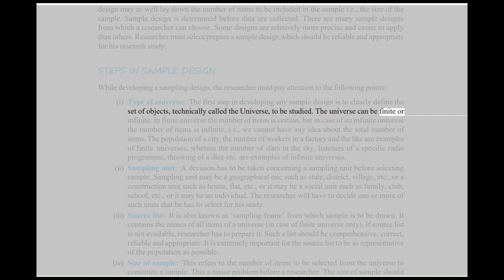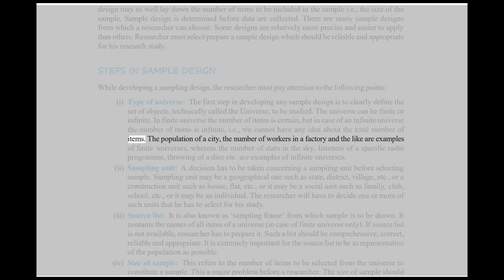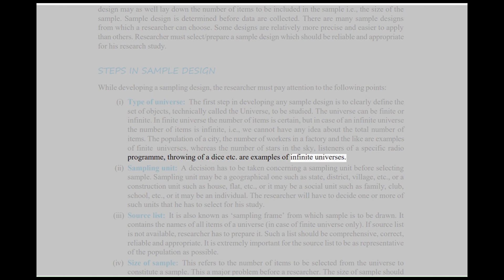The universe can be finite or infinite. In a finite universe the number of items is certain, but in case of an infinite universe the number of items is infinite, i.e. we cannot have any idea about the total number of items. The population of a city, the number of workers in a factory, and the like are examples of finite universes, whereas the number of stars in the sky, listeners of a specific radio program, throwing of a dice, etc. are examples of infinite universes.